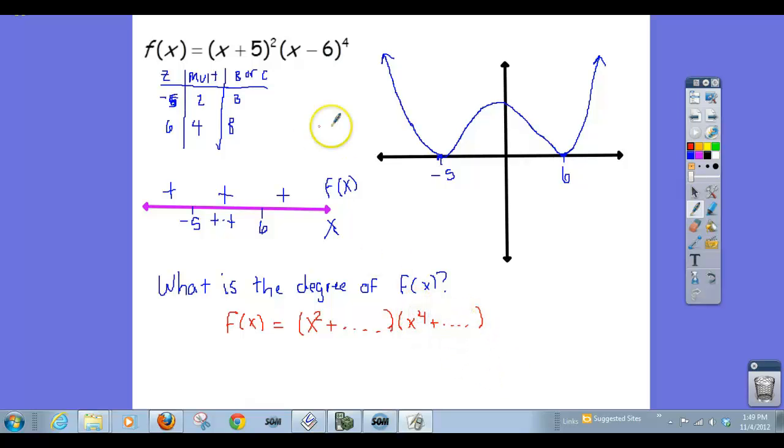And then if I do this out, I get x to the 4th plus some stuff. And I don't really care what that stuff is, but notice if you do this out, the first term would be x to the 4th. And so what would happen if I multiplied this by this? At some point, when you do your foil, you would be multiplying x squared times x to the 4th, which equals x to the 6th. And then after that, there's a bunch of all these combinations of multiplying that would happen with the other terms, but that would just contribute to some stuff. And so using that reasoning, we can figure out that the degree of the polynomial is 6.